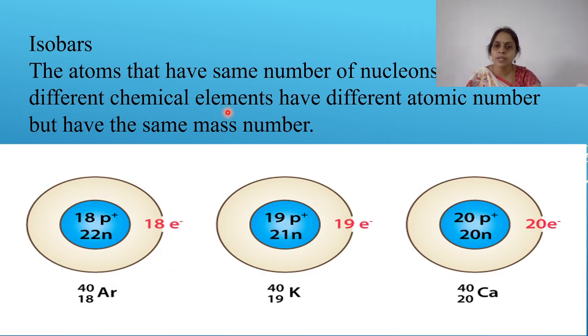What are isobars? The atoms which have same number of nucleons means the number of protons and neutrons. The mass number will be same. But their atomic number keeps on varying. You can see neutron number over there. Neutron number is also changing. You can see proton number is also changing. You can see over here argon, potassium and calcium. They have same mass number but they have different atomic number.